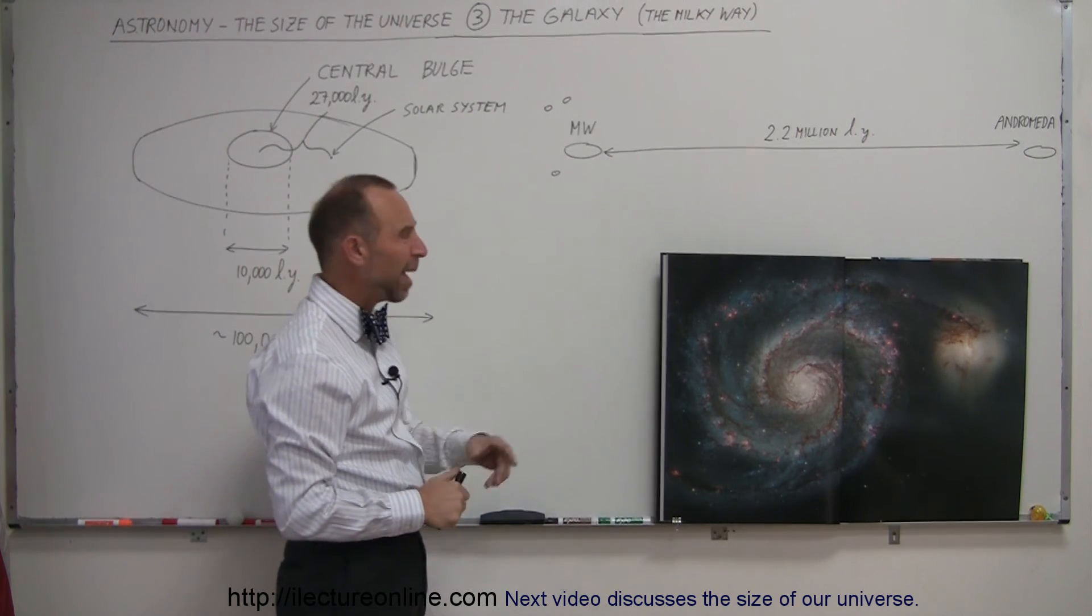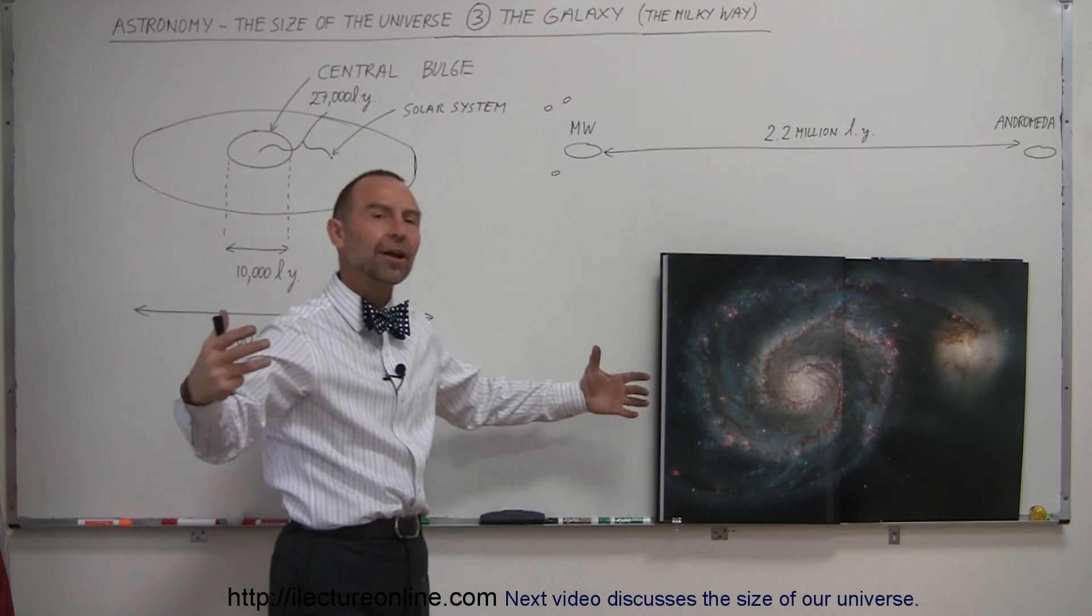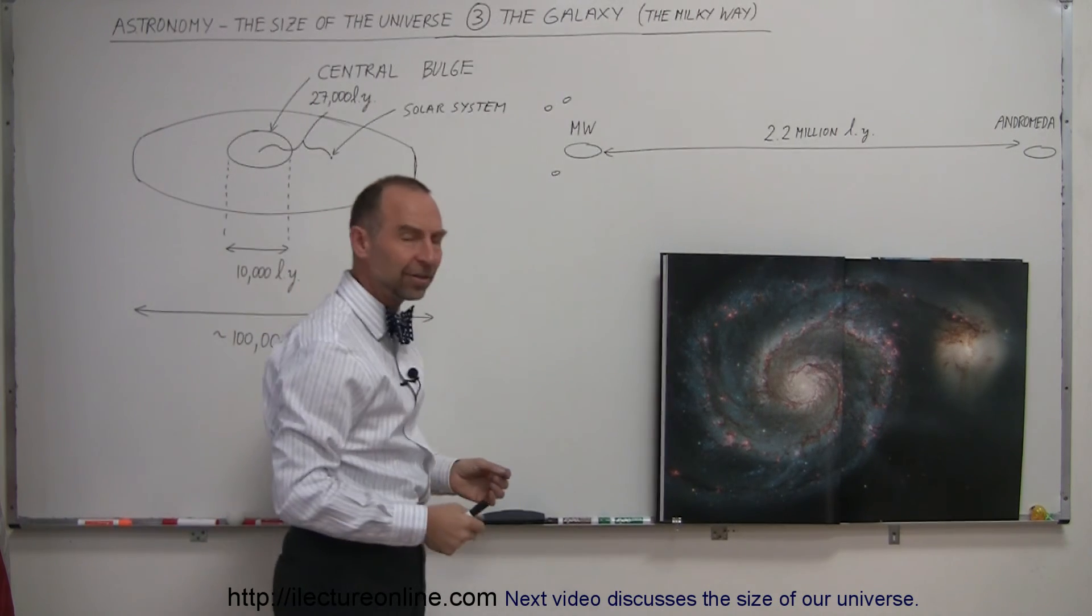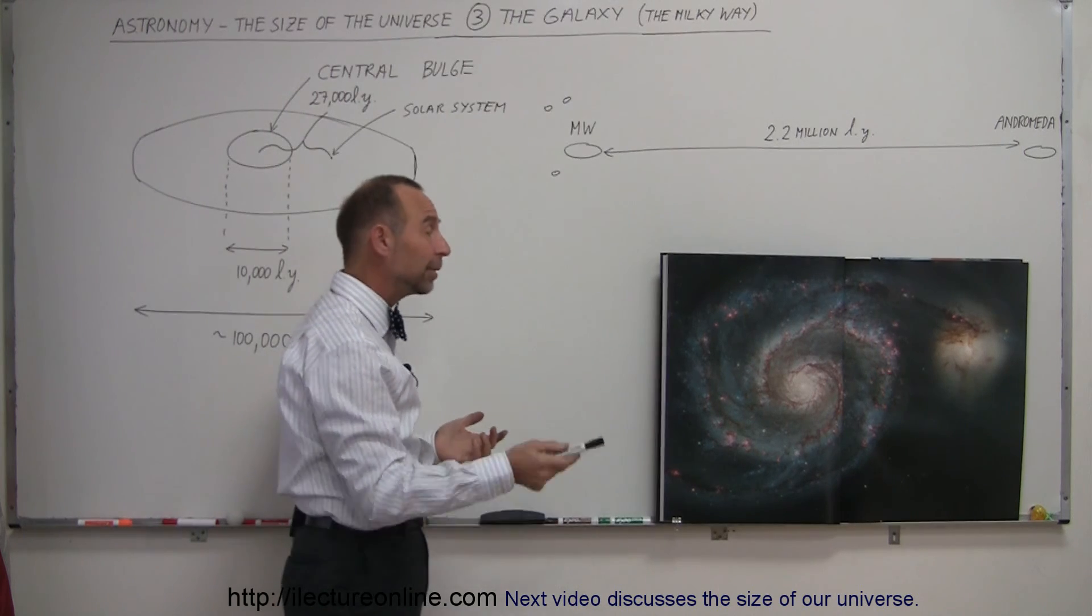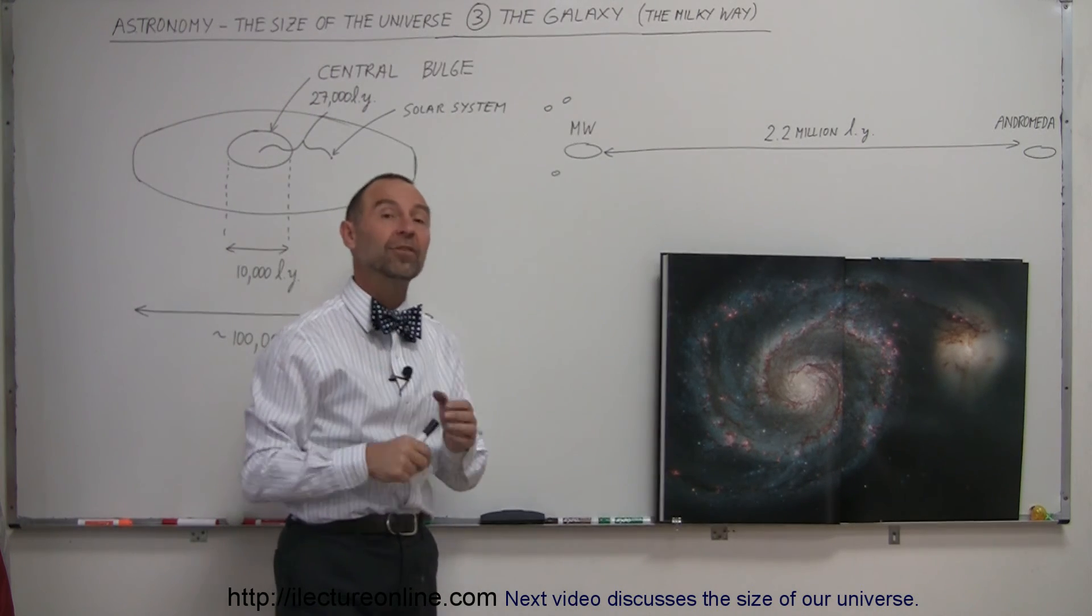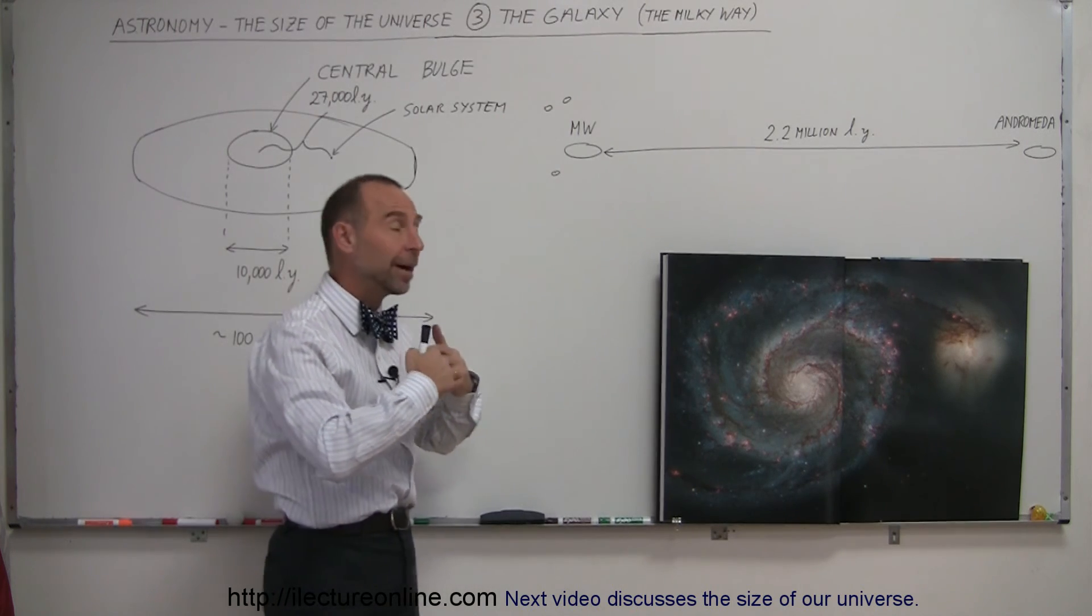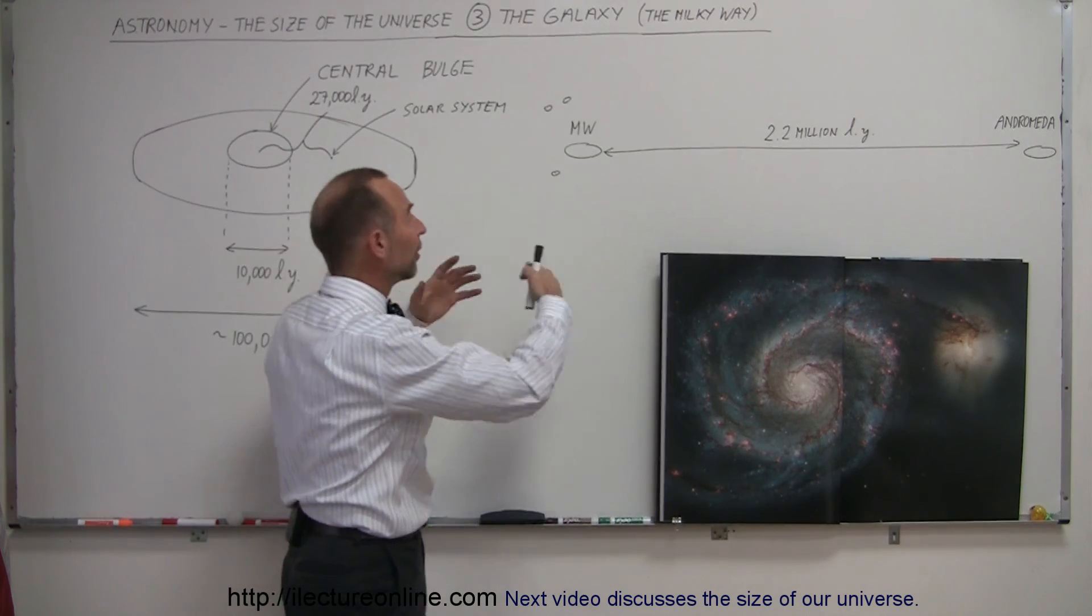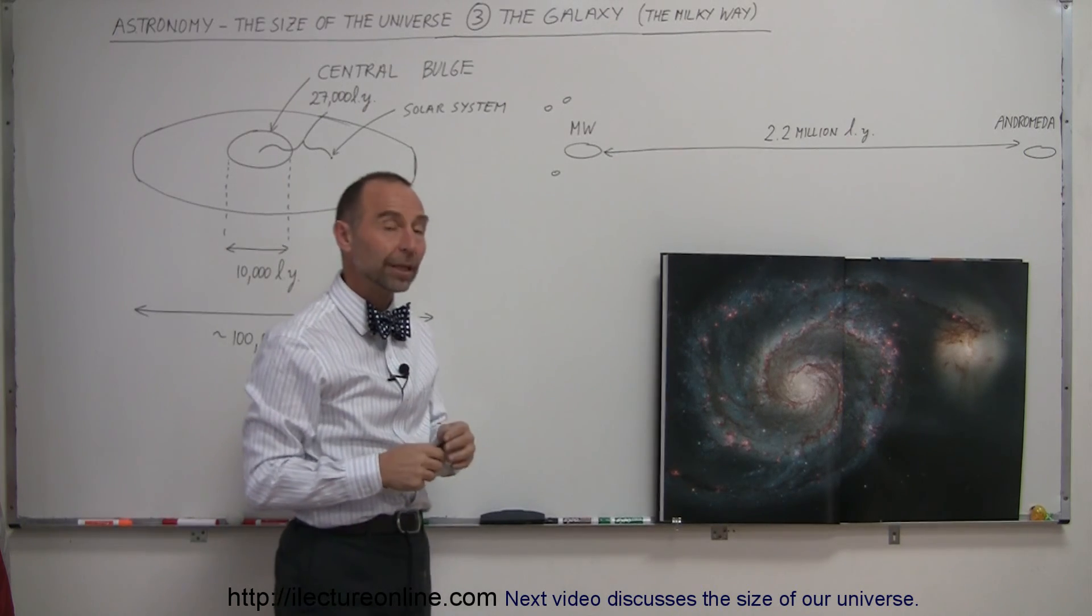Now the question is, how many of these things are in our universe? How big is our entire universe? It must be filled with these galaxies. And that's really the question. And one of the big questions that we've been able to answer by putting the Hubble Space Telescope in space. And in my next video, I will begin to talk about the size of the entire universe. All these galaxies filling up our entire universe. How many must there be? And how big is our universe really?